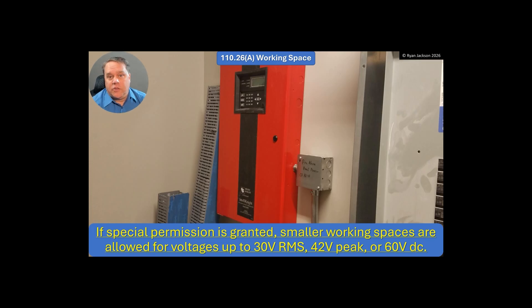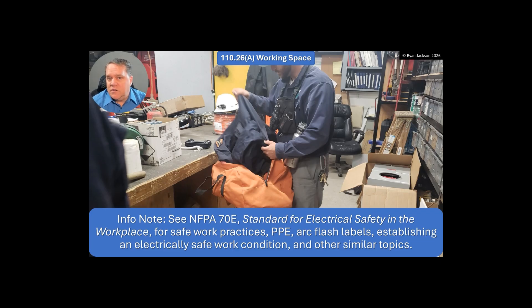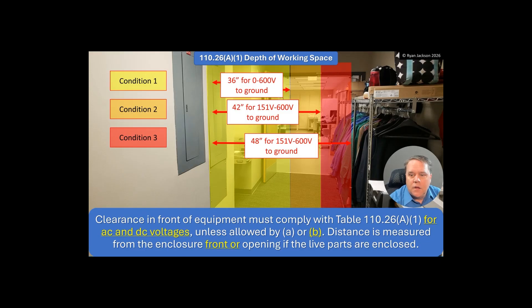There's still an informational note here that says to reference NFPA 70E — Standard for Electrical Safety in the Workplace — for safe work practices, PPE, arc flash labels, establishing an electrically safe work condition, and similar topics. 110.26(a) is for working energized, and NFPA 70E tells you how to work energized safely: how to dress, lock-out/tag-out, how to verify absence of voltage.